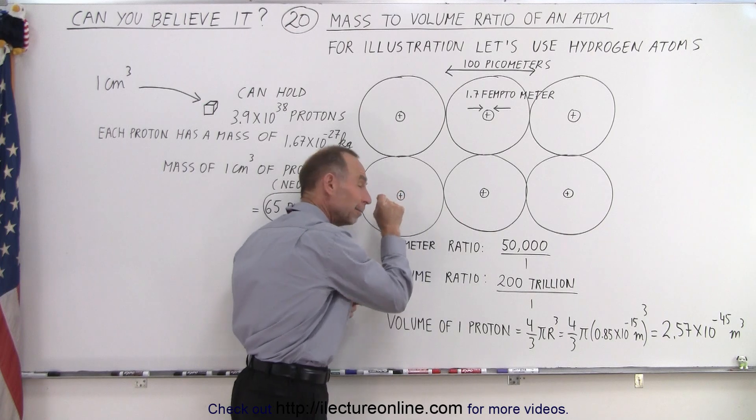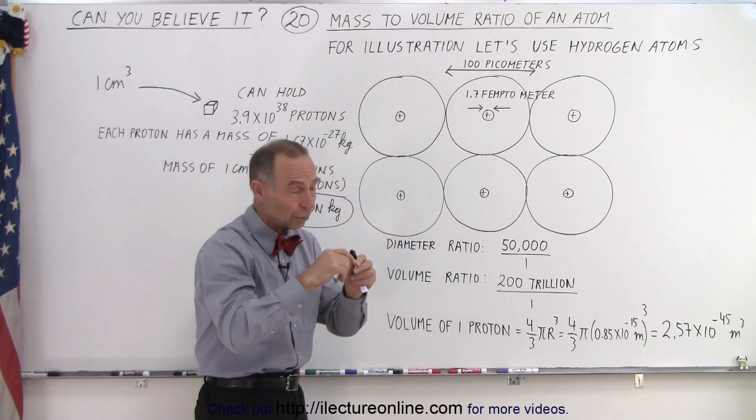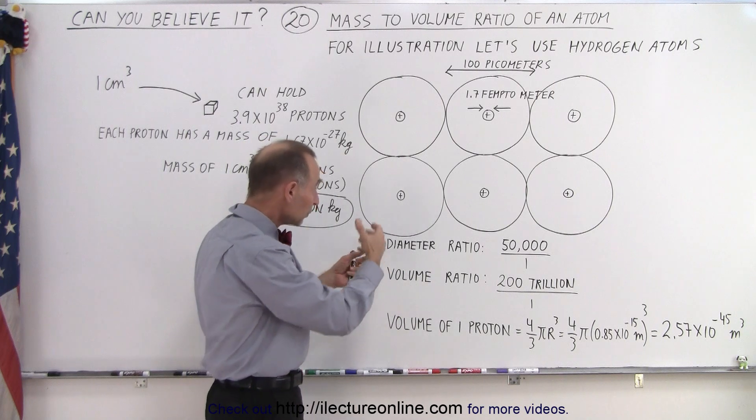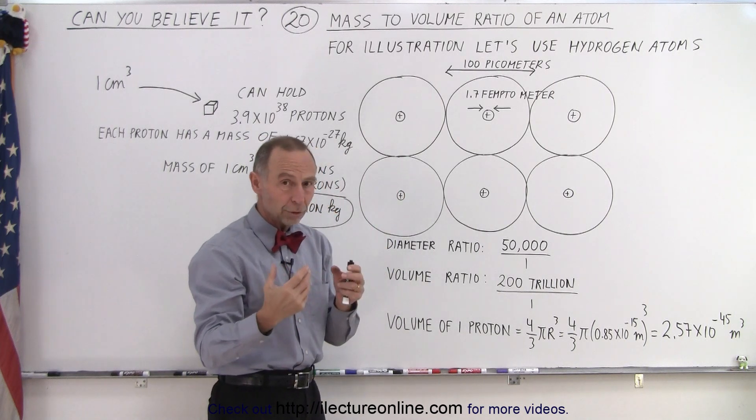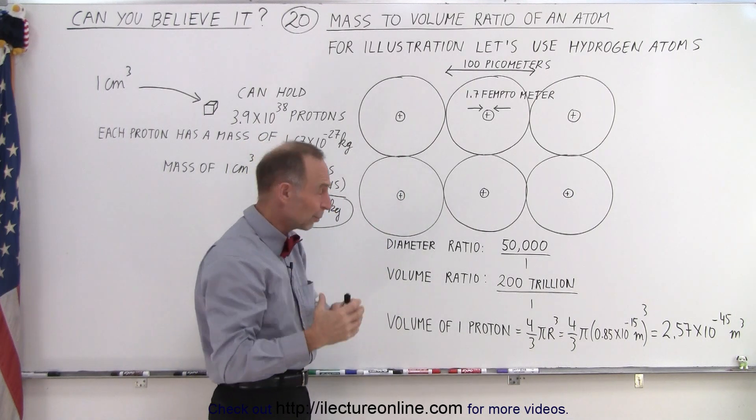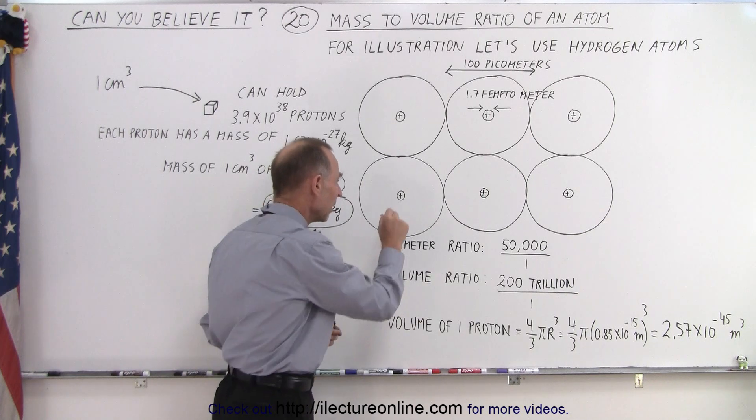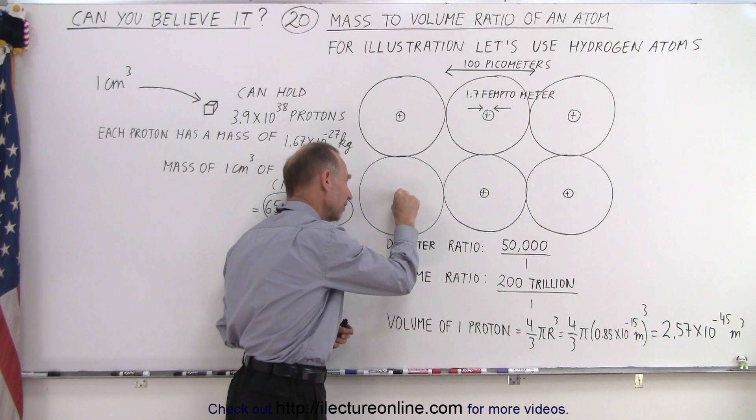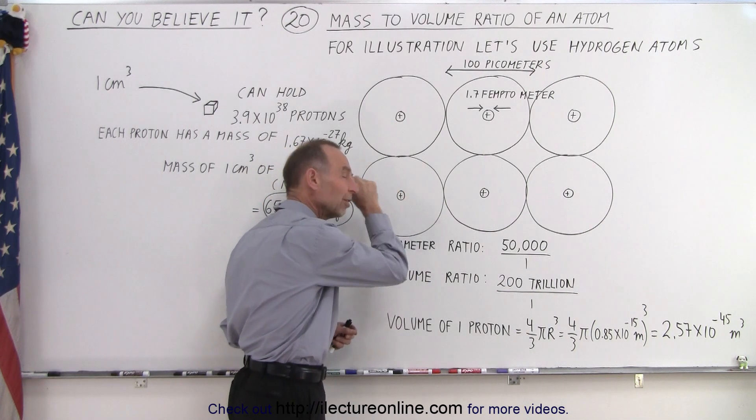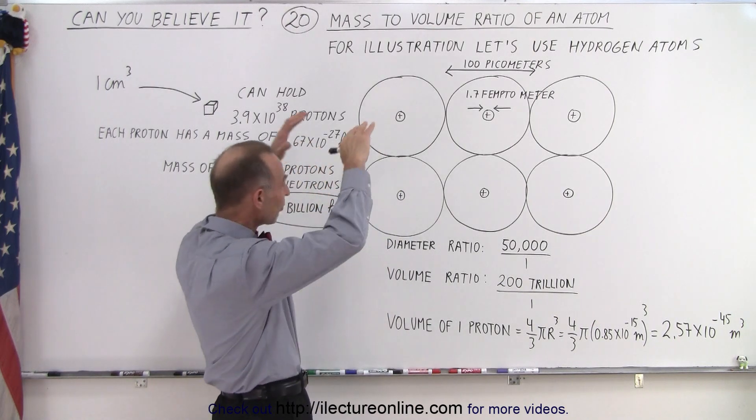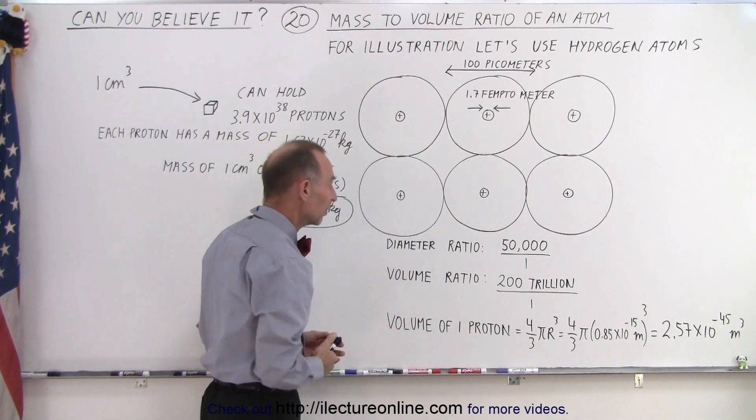So it's kind of interesting to realize that each atom has its mass concentrated in that tiny little ping in the middle called a proton, or of course if you have a heavy element then you'd have a number of protons and neutrons. But again the size ratio would be about the same. So imagine that all the mass would be at that very tiny little center called the nucleus, and then the volume would be enormous in comparison—200 trillion to 1.